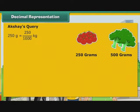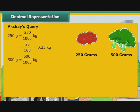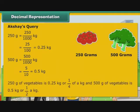Let us now express the vegetables Akshay's mother purchased as kilograms. 250 grams is equal to 250 by 1000 kg, that is 25 by 100 kg, that is 0.25 or 1 by 4 kg. 500 grams is equal to 500 by 1000 kg, that is 5 by 10 kg, that is 0.5 or 1 by 2 kg. So 250 grams of vegetables is 0.25 kg and 500 grams is 0.5 kg.